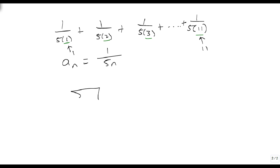So this one's even easier than the last one, it's just the sum, as i goes from 1 to 11, of 1 over 5i. And there's our answer, we've now written that in summation notation.